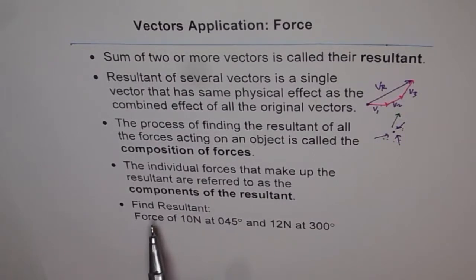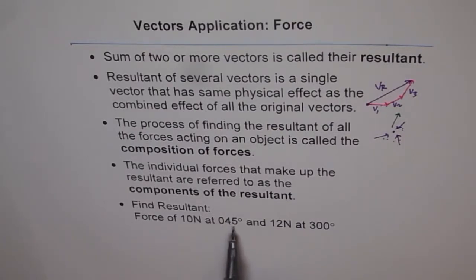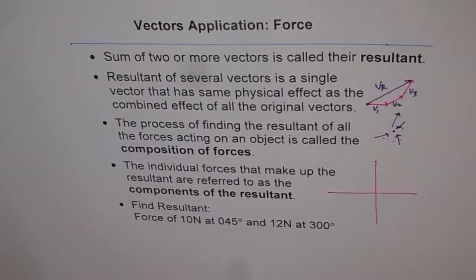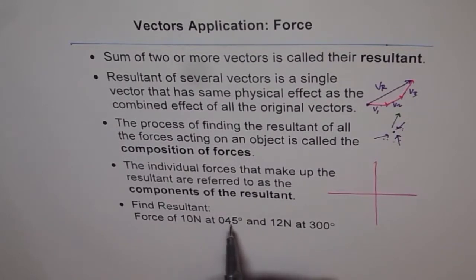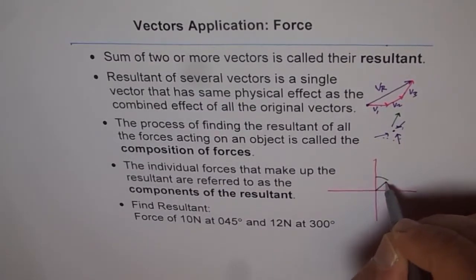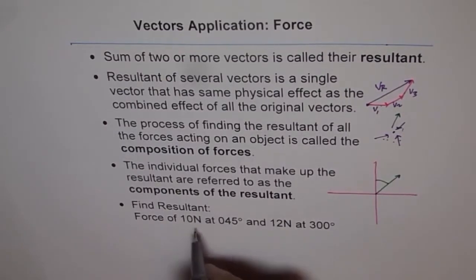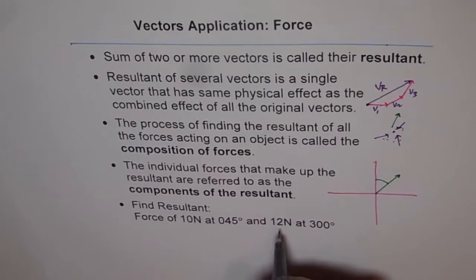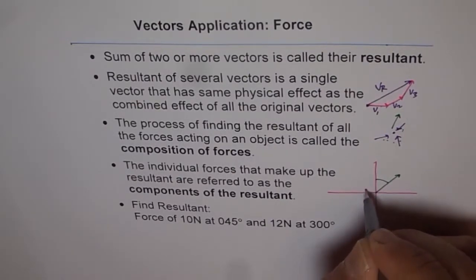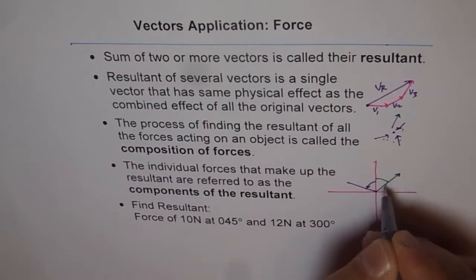We have a small question: find the resultant. We are given a force of 10 newtons at 045 degrees bearing and 12 newtons at 300 degrees bearing. The bearing 045 is 45 degrees from north, so that is our 10-newton force. The other force is 12 newtons at 300 degrees, which is 60 degrees from north on the other side.